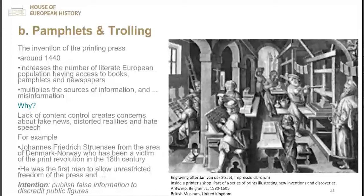The invention of the printing press around 1440 increased the number of literate Europeans having access to books, pamphlets and newspapers. It multiplied sources of information and misinformation — the lack of content control created concerns about fake news, distorted realities and hate speech. From the beginning, there was a lively debate on the freedom of expression in print. The history of the printing press is a good start when you tackle media literacy with your classroom: should we have the freedom to publish whatever we want or not? Erasmus was strongly against freedom of press, saying that unrestricted printing would devalue the profession.